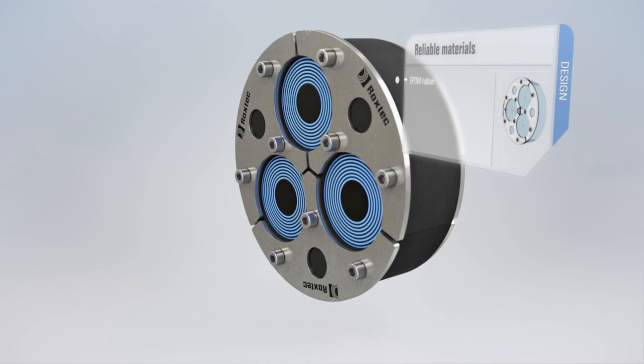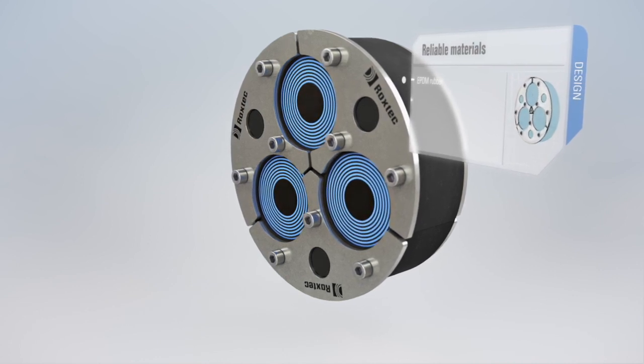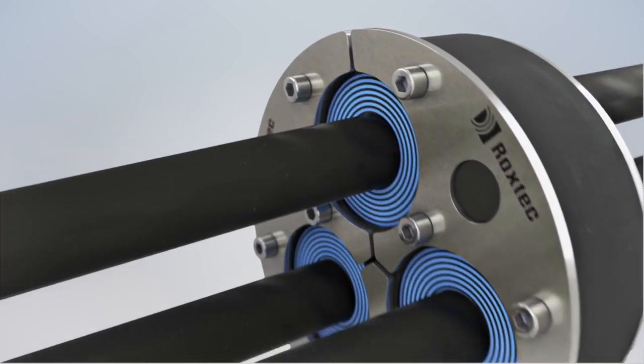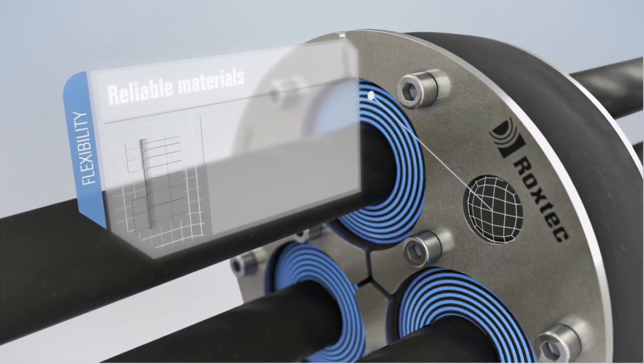The seals are made of EPDM rubber and have fittings of stainless steel. The Roxtec H3UG seal is ideal for sealing and retention of cables or pipes in trefoil formation.